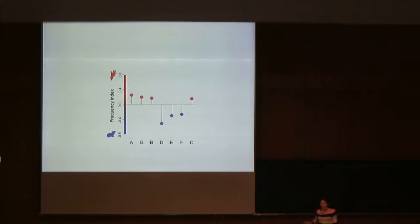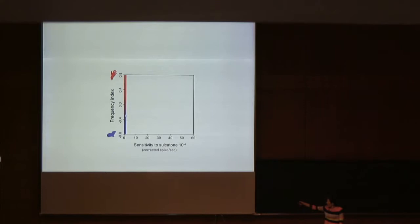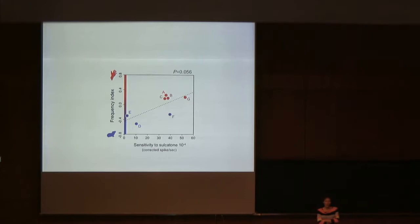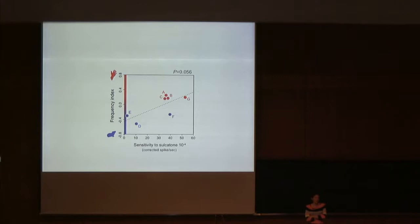If differences in sensitivity explain why each allele is biased towards human-preferring or guinea pig-preferring F2 mosquitoes, we should be able to use an allele's sensitivity to predict its relative frequency in F2s, and we should see a positive relationship — the most sensitive alleles biased towards human-preferring mosquitoes and least sensitive towards guinea pig-preferring. We do see a positive relationship, but with just seven alleles the sample size is quite small and it's marginally significant. Allele F was highly sensitive to sulcatone but biased towards guinea pig-preferring F2s, so we wondered if allele-specific expression was part of the picture we were missing.